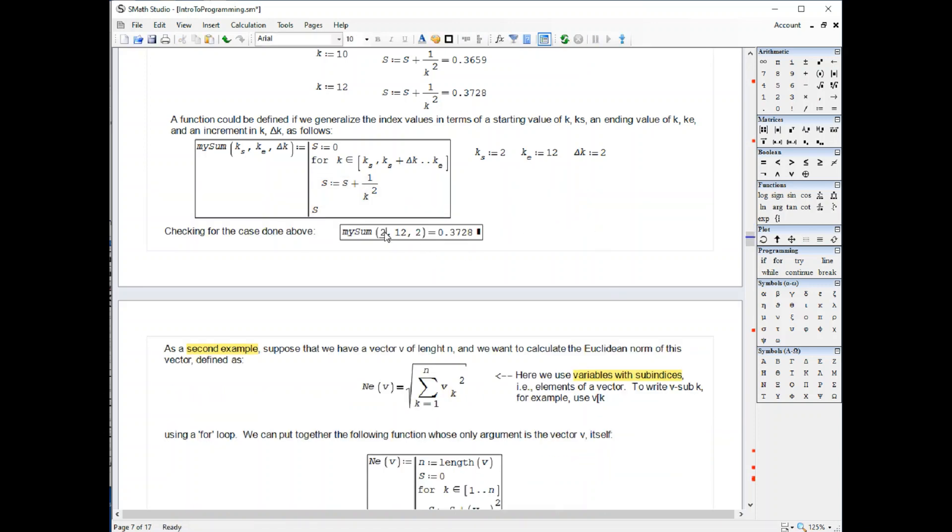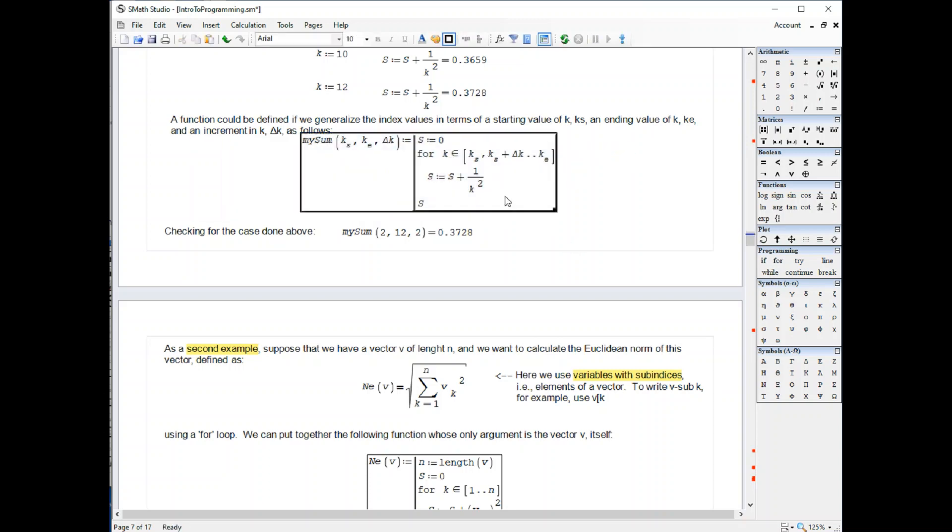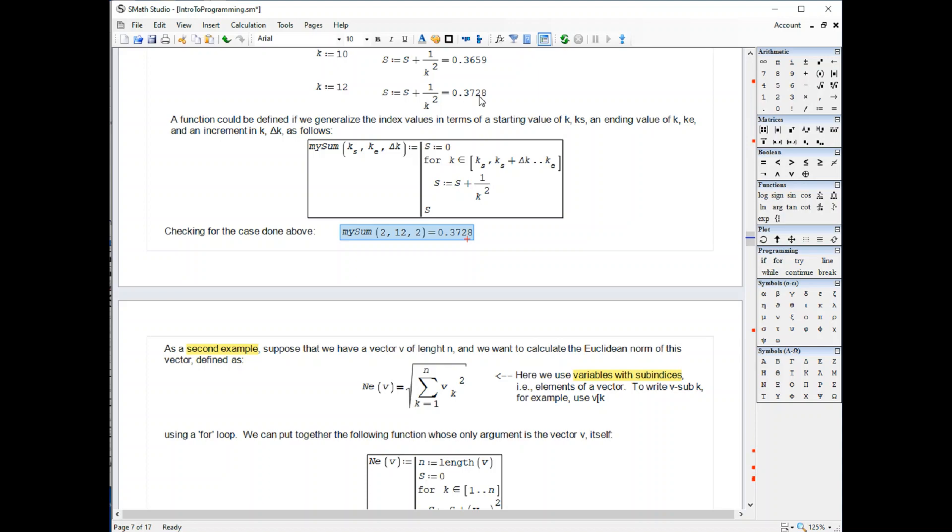Now we get the value that I was expecting. And so for the case that I had before, if we enter the value of 2, 12, and 2, we get the 0.378 that we were doing before.